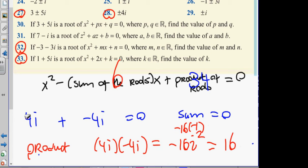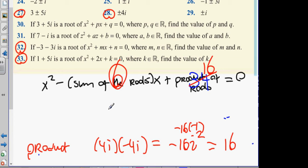So, the answer for this one is going to be: the sum of the roots is 0, so it doesn't count. The product of the roots is 16. So, we're going to get x squared plus 16 equals 0. Is that okay? Alright, guys.